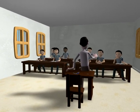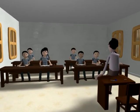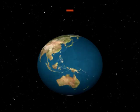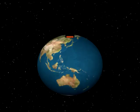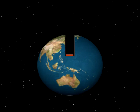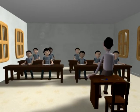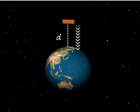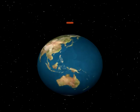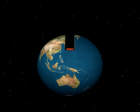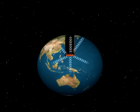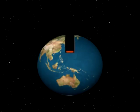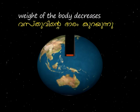What will happen if the body is carried into the interior of the earth? The weight of the body does not increase but decreases. A body on the surface of the earth is attracted by the earth in one direction — towards its center. But when the body is within the earth, there are forces of attraction from different sides. That is why the weight of the body decreases when it is moved inward. At the center of the earth, the body will have no weight at all.